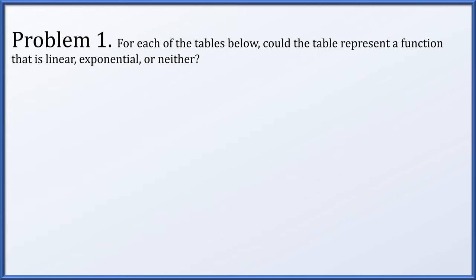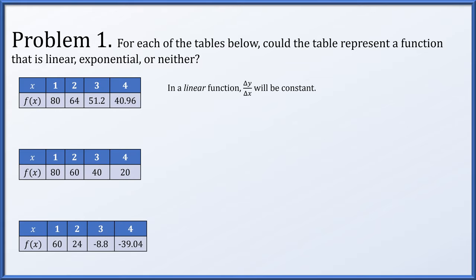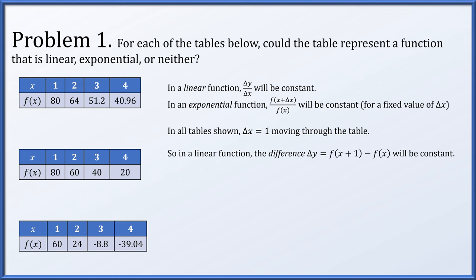In problem one, we're given several tables that could represent functions or not, and if they do, are they linear, exponential, or neither? For a linear function, delta y over delta x will be some constant. For an exponential function, f(x + delta x) divided by f(x) will be constant as long as delta x remains fixed. In all of the tables shown, delta x equals 1, going from x equals 1, 2, 3, 4. So with delta x equals 1, in a linear function, f(x+1) minus f(x) will be the same constant always. Whereas in an exponential function, the ratio f(x+1) divided by f(x) will be constant.